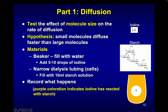With starch on the inside of the dialysis tubing and iodine on the outside, both are going to slowly diffuse across the membrane, but iodine should diffuse faster. When iodine and starch meet, iodine reacts with starch and turns purple. So if iodine diffuses into the tubing faster than starch diffuses out, we'll see that purple coloration inside the dialysis tubing first.